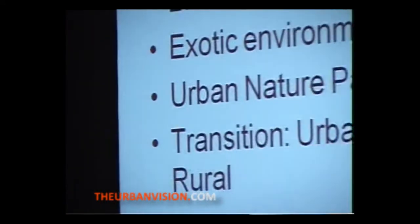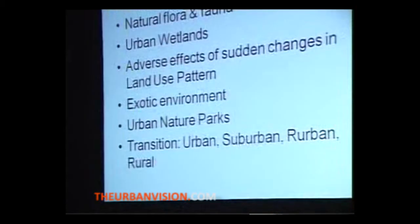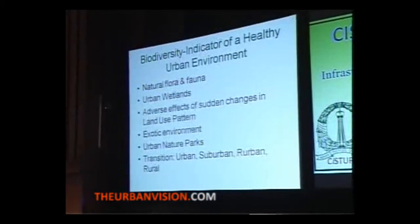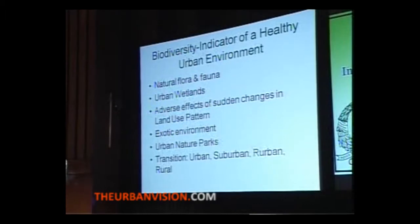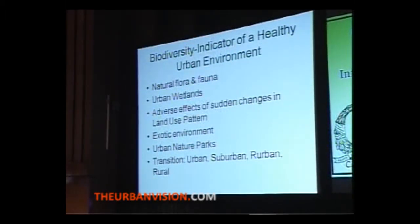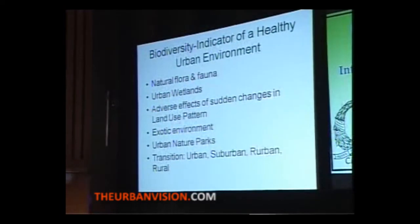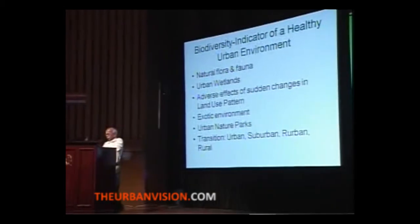What is the indicator — the biodiversity indicator for a healthy urban environment? Natural flora and fauna to begin with, and urban wetlands. There are many adverse things that happen because of land use changes. Many exotic species start coming up because of sudden changes in land use, and those have to be taken care of. Some of the solutions could be urban nature parks. And the most important is looking at the transition — we have a metropolitan city, on the border we have suburbs, and then a mix of urban and rural areas.